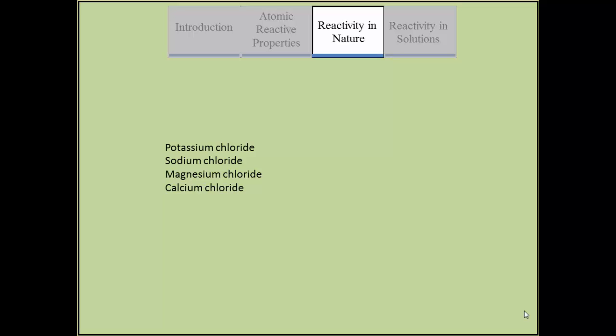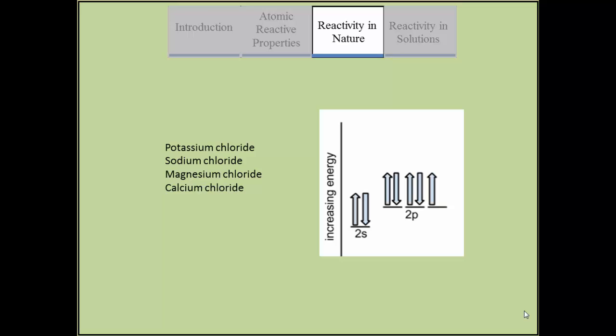Chlorine typically has an oxidation state of negative one. In its electron structure, chlorine has two electrons in the s orbital and five in the p orbital. It gets its highly reactive properties because the p orbital needs to gain one more electron to be stable.